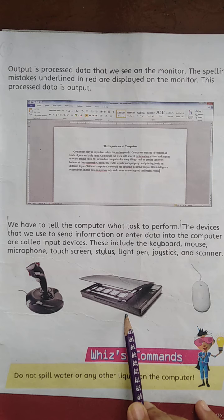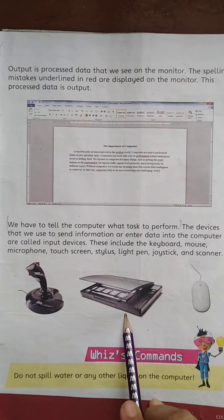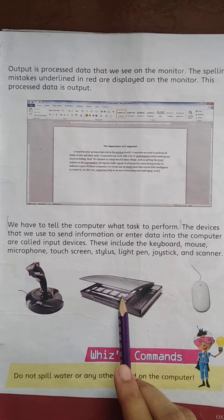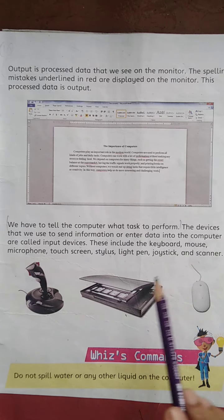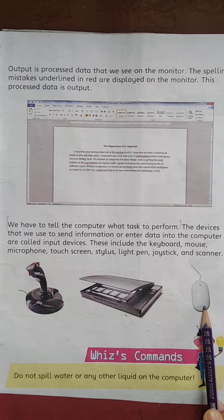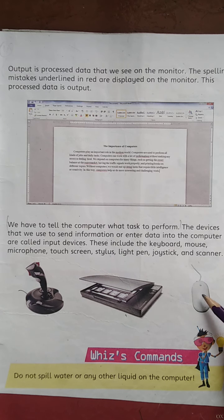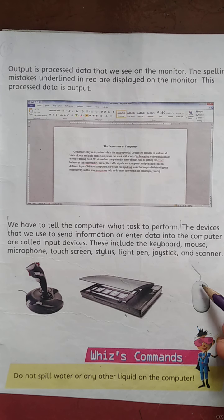A scanner is used to capture images into the computer. A mouse is also a pointing device. The user moves the pointer on the screen with the mouse and controls the movement of the cursor. A wheel mouse contains left and right buttons and a wheel in the middle.